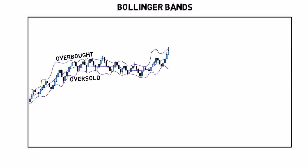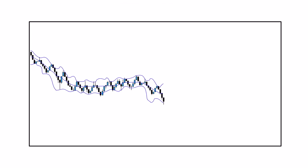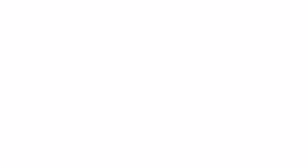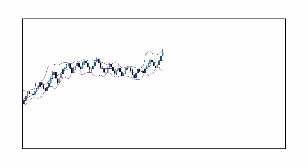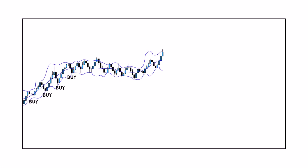However, remember to always trade with the trend. So if the price is in a downtrend, you will only look for selling entries at the upper band and set your price target at the lower band. And when the price is trending upwards, you will only look for buying entries at the lower band and set your price targets at the upper band.